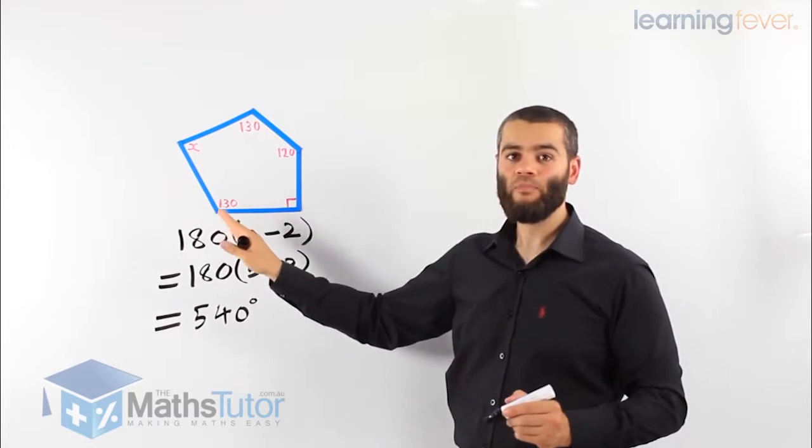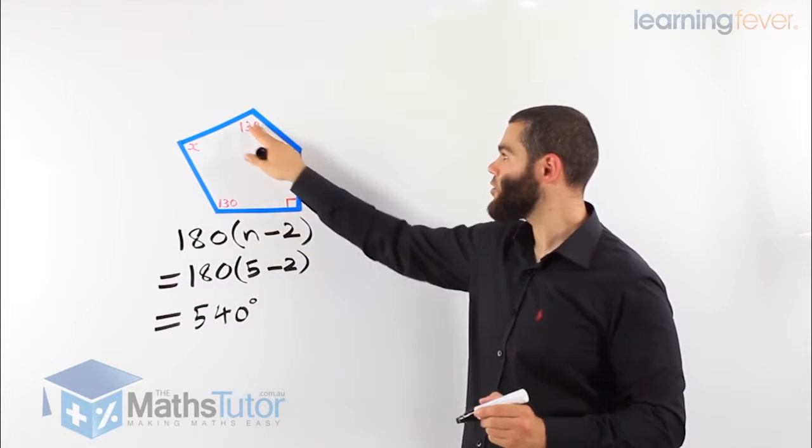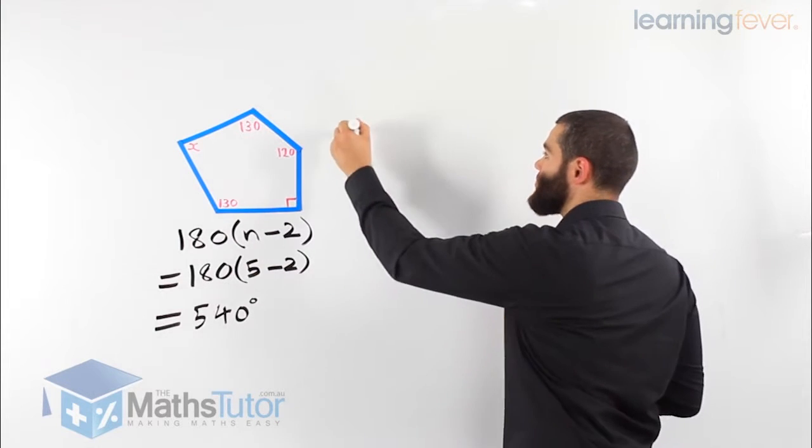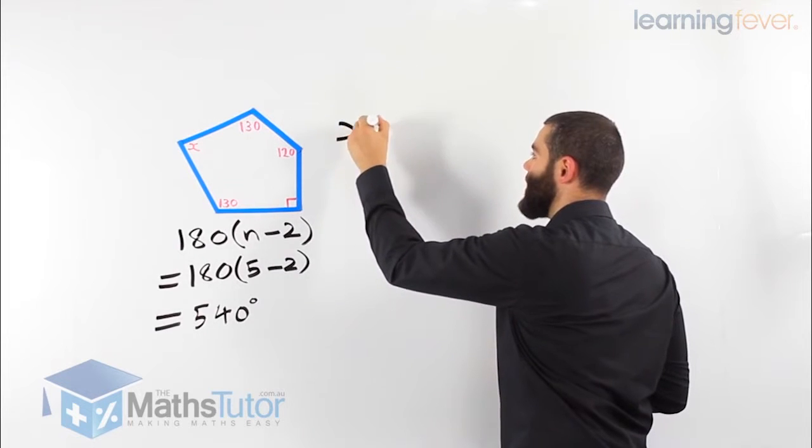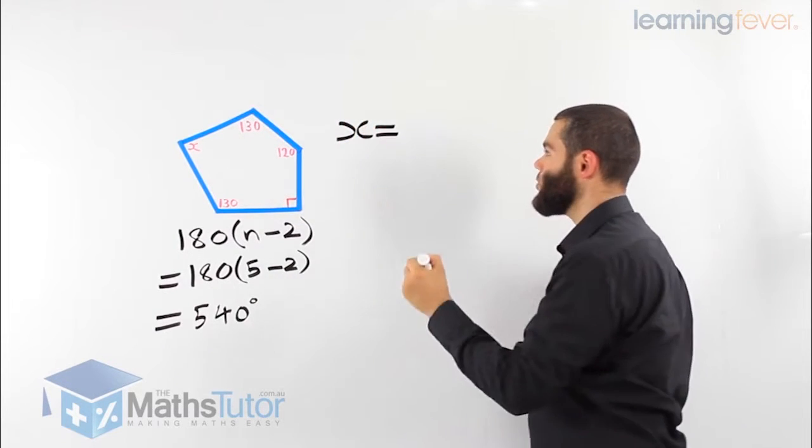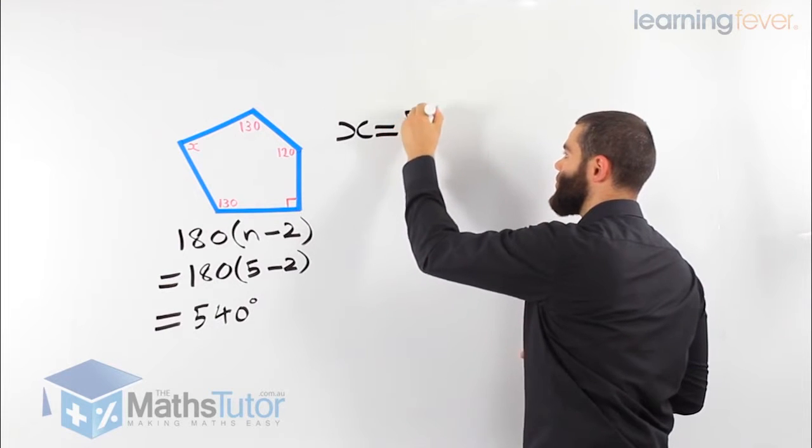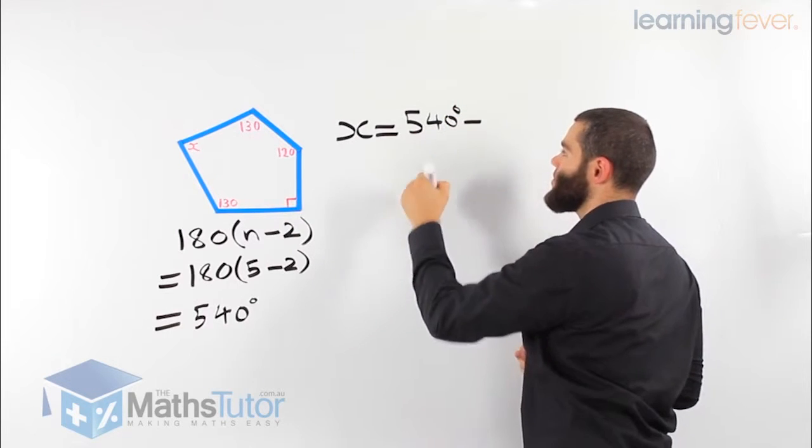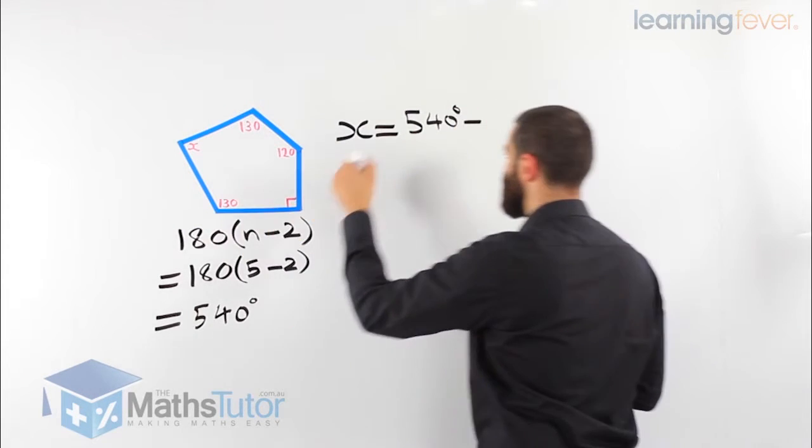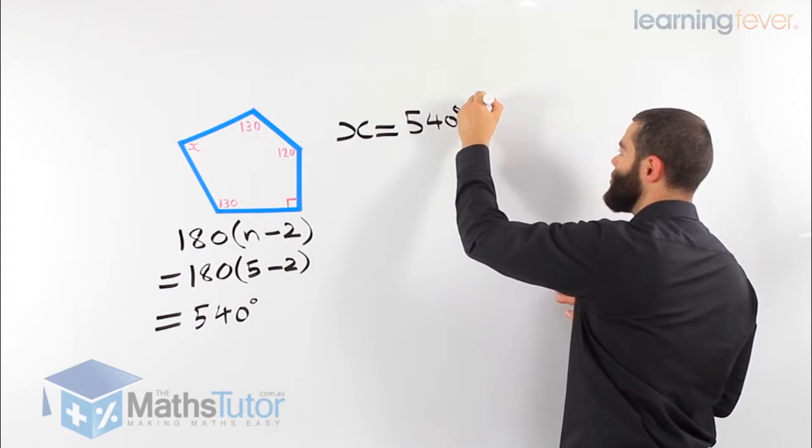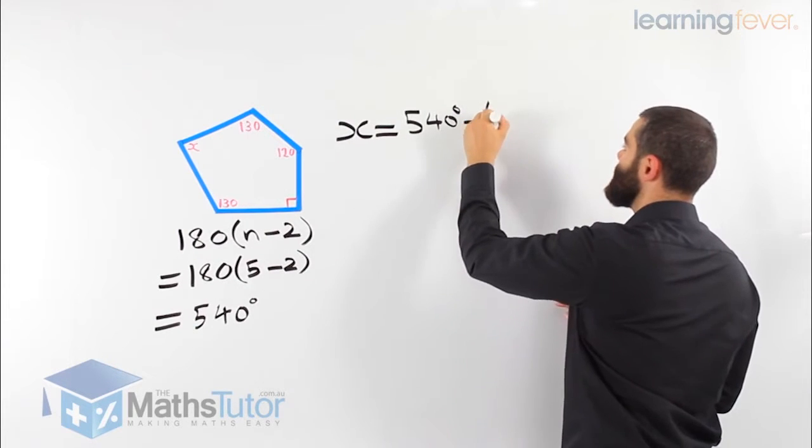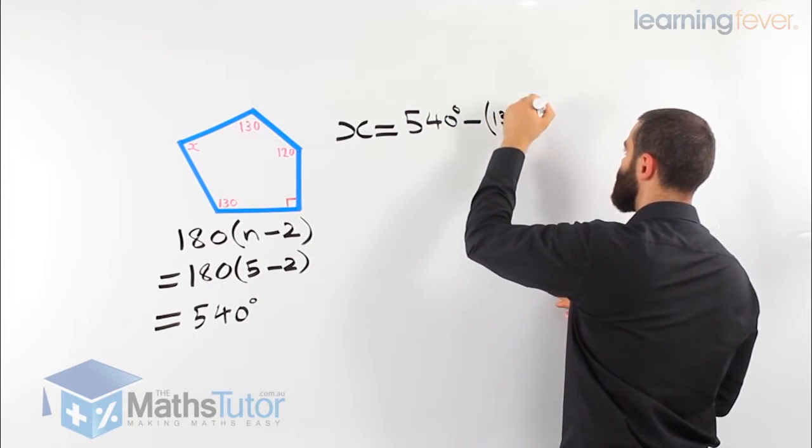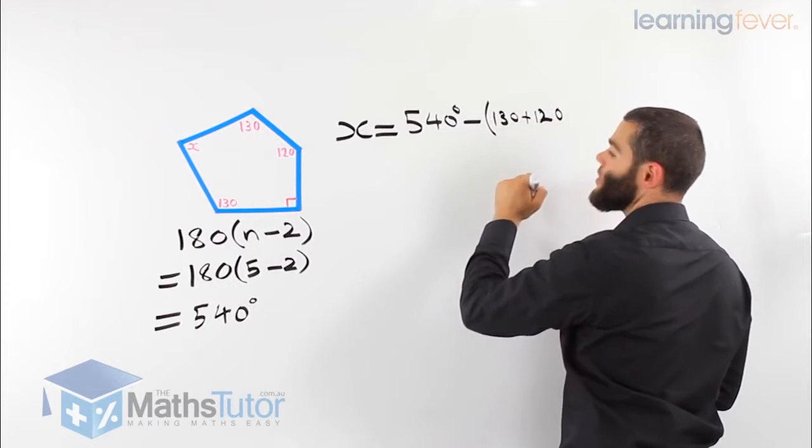So now that we know the total, we can take all the angles away to find our missing angle x. So now working out, x is going to equal the total 540, take away the angles that we already know, which are 130, 120, and 90 degrees.